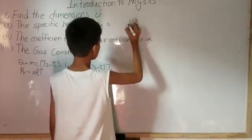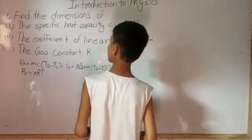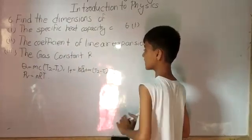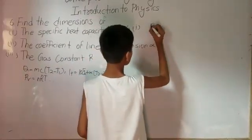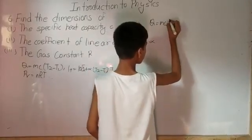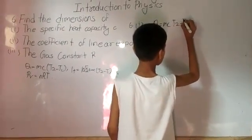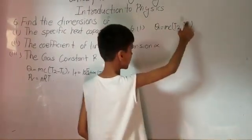First we have to find out the dimensions of specific heat capacity C. So which equation for it has been given? Let us write it here. Q equals to MC(T2 minus T1). This equation has been given to us.